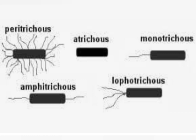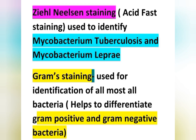Ziehl-Neelsen staining is also known as acid-fast staining and is used to identify Mycobacterium tuberculosis and Mycobacterium leprae. Gram staining is used for the identification of almost all bacteria and helps differentiate gram-positive and gram-negative bacteria.